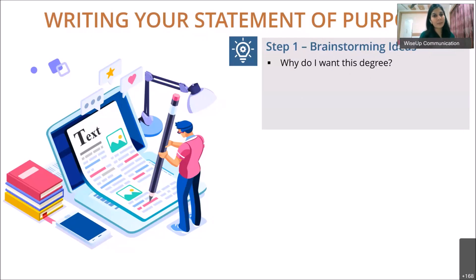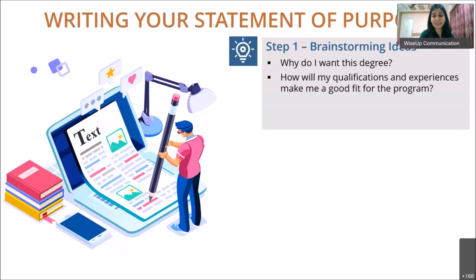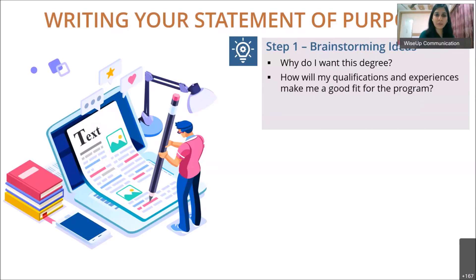Why are you so passionate about this field and want to specialize in it? The next brainstorming question is: how are my qualifications and experiences going to make me a good fit for the program? The admissions committee looks at this to see whether you can tackle the challenges of graduate study. Think about experiences, achievements, and qualifications that show you've handled challenging situations and can succeed.